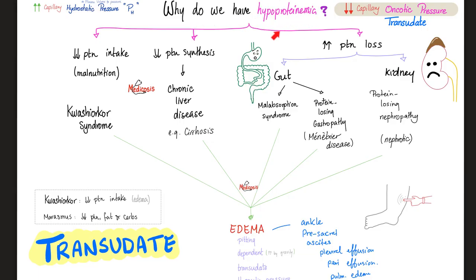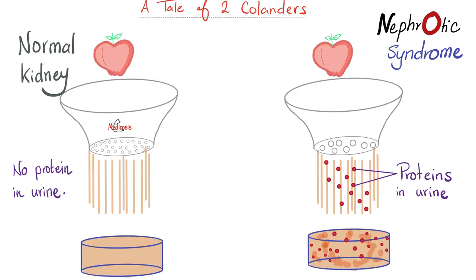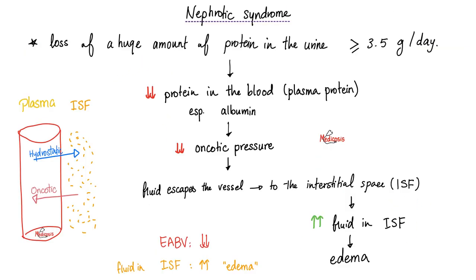There are many reasons for hypoproteinemia, and one of them is nephrotic syndrome — you're losing proteins. That's why you get dependent pitting edema that's a transudate. A normal kidney is like a good colander — no protein left behind. But a kidney with nephrotic syndrome is like a screwed-up colander; you end up with proteins in the urine. When you lose proteins in the urine, you have less proteins left in the blood, which leads to edema due to decreased oncotic pressure.